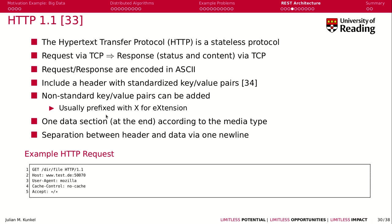You can also add non-standardized key-value pairs; often they are prefixed with X for extension. There is one data section at the end after the request is specified, which includes the request and the response that depends on the media type specified. There is simply a new line between the header and the data that separates those two different types of information. The data section can use any data format, while the header is always ASCII in key-value notation.